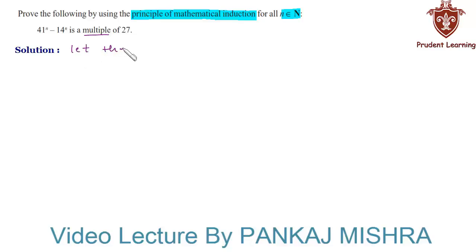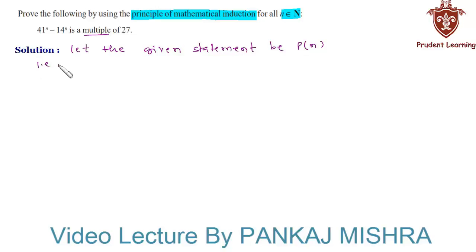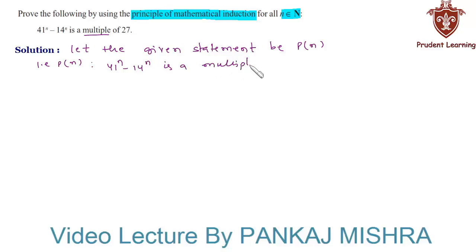Let the given statement be P(n), such that 41 raised to n minus 14 raised to n is a multiple of 27. Now in our first step we will check that this statement is true for n equal to 1.